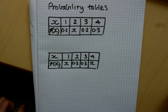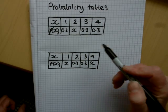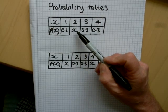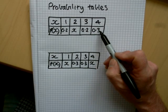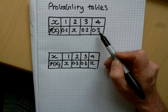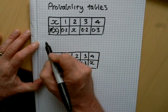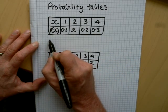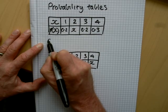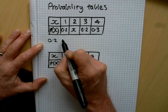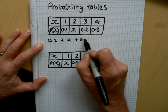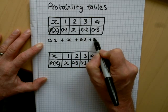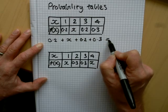In the first table, you'll see that the probability that x is 1 is 0.2, the probability that x is 2 is unknown, the probability that x is 3 is 0.2, and the probability that x is 4 is 0.3. So what we can write down as a fact is that 0.2, plus the unknown probability, plus 0.2, plus 0.3, will all come to 1.